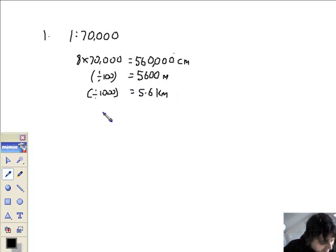I think it's more challenging than grade E, getting these big numbers round your head. So basically, an 8 centimetre line on a map or a distance on a map of 8 centimetres actually represents 5.6 kilometres in real life. Let's just do one more.